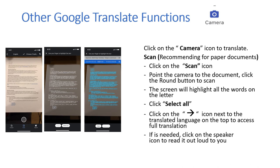Click Select All. Click on the arrow icon next to the translated language on the top to access the full translation. If needed, click on the speaker icon to read it out loud to you.